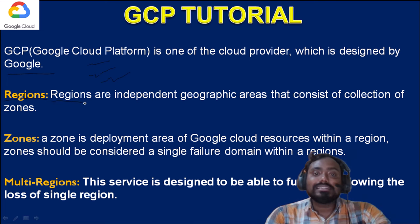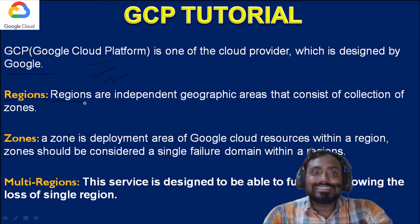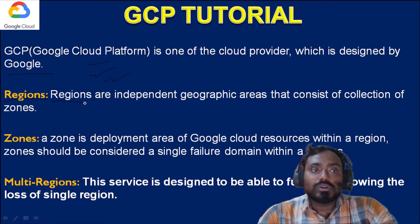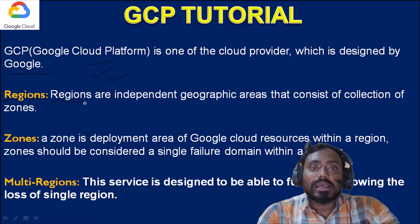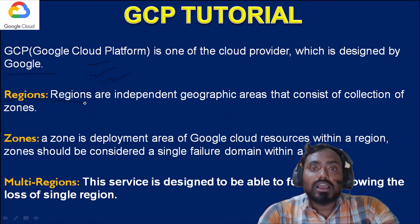In each region, a total of three zones will be there. But there is one region which is exceptional — it has four zones. This region was designed at the start, when Google proposed to have four zones in each region. Later, the Google team analyzed and decided there was no need for four zones, so they went with only three. That is why the Iowa region has four zones while all other regions have only three.